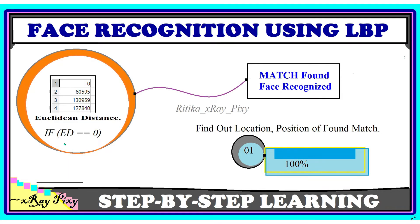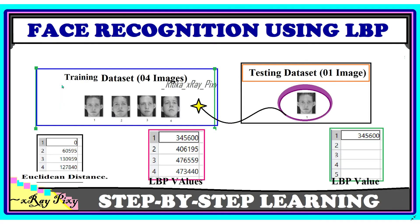Since the Euclidean distance is zero, a match is found and the face is identified. The computer finds the position of the matched image, which is at the first position. We get a 100% identification rate because we are looking for just one image and it is found in the dataset.